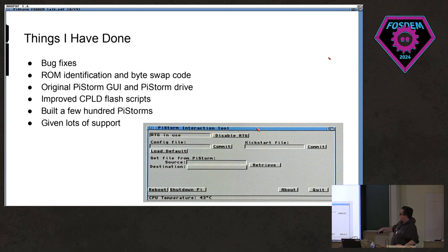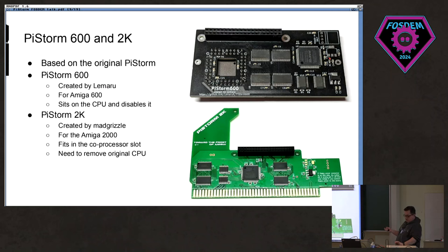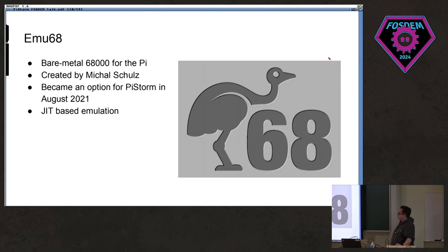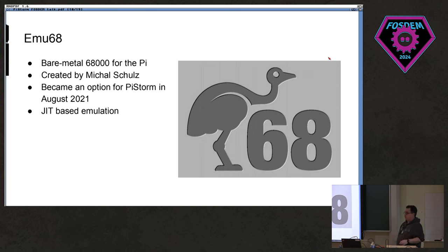I did a lot of the early bug-fixing work for the original Musashi PiStorm, and then we released a version for the Amiga 600 and Amiga 2000. The Amiga 2000 has a coprocessor slot so it's much easier to just plug it in there. For the Amiga 600 you have to do a hacky thing where it sits on top of the PLCC CPU with a signal to put that CPU to sleep. Then emu68 came along — a bare-metal emulator for the Raspberry Pi for the 68000. You don't have to boot into Linux anymore, and it became an option for PiStorm in 2021 and is now pretty much the de facto standard.